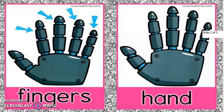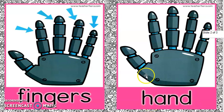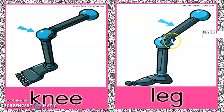Next one: Fingers. What is fingers? Look here — jari. We call it fingers. Hand — hand adalah tangan. Knee. What is knee? Lutut. Leg. What is leg? Kaki.